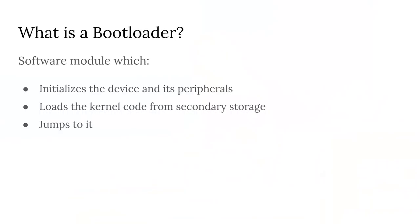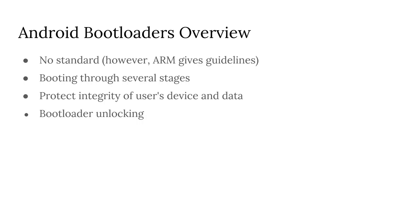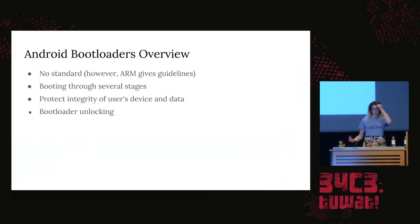The bootloader's job is: we've powered on, we need to get everything initialized. We initialize the device and the peripherals, and then the final step of the bootloader is to take the kernel and execute it. The kernel obviously needs to be loaded from storage somewhere. On Android specifically — most Android devices are ARM — there's no particular standard for what an ARM bootloader should look like, but the ARM people do give you some guidelines. There's an open source implementation of what a secure bootloader should look like. It's a complicated affair that needs to preserve several security properties. Above all, the goal is to make sure that things are secure and that user data is protected.